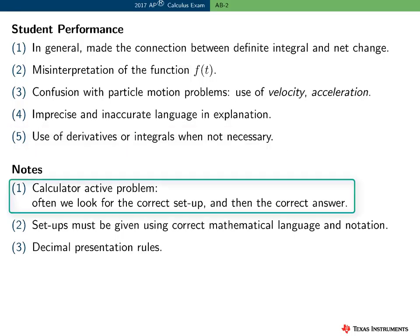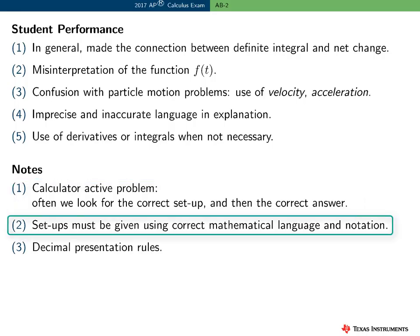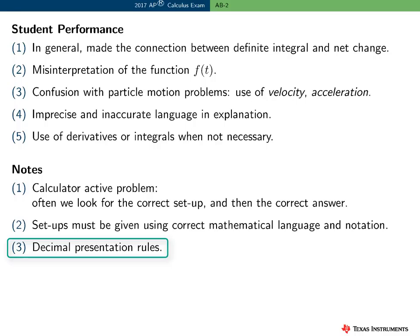Just a quick reminder: this was a calculator active problem. When scoring this type of problem, we often look for a correct mathematical expression and then simply the final answer. These mathematical expressions or setups must be presented using mathematical notation, not calculator syntax. We have very prescriptive, specific decimal presentation rules for scoring, and remember that final answers must be presented with three digits to the right of the decimal, rounded or truncated.